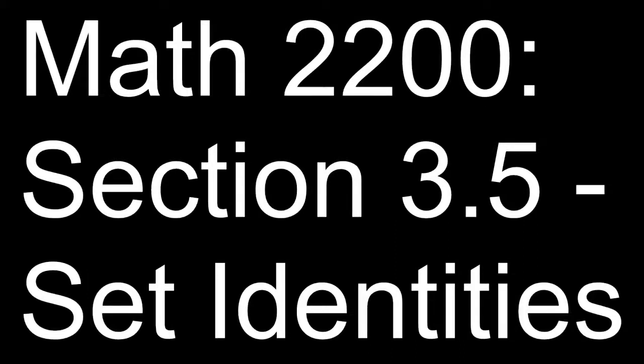Hello everyone from Math 2200, Discrete Mathematics. It's Professor Wenson here again with a video on your ZyBooks section 3.5 titled Set Identities. You're going to see that this section is very similar to a section from chapter one where you had to show that two statements were logically equivalent. Remember all those laws of propositional logic from chapter one, like DeMorgan's law? Those are coming back here but in relation to sets and when two sets are equal.